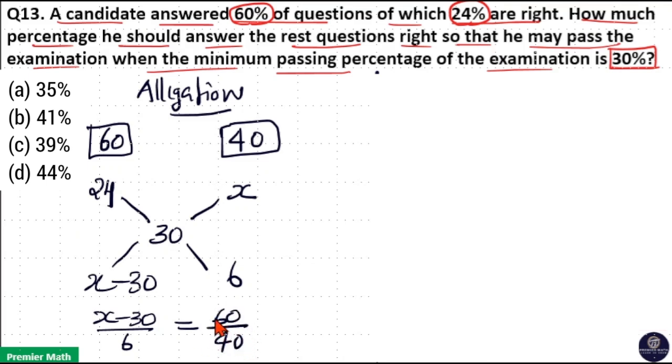Now, 20 goes 3 times in 60, 20 goes 2 times in 40, and 2 goes 3 times in 6. So x minus 30 equals 3 times 3, which is 9. Therefore, x equals 30 plus 9.